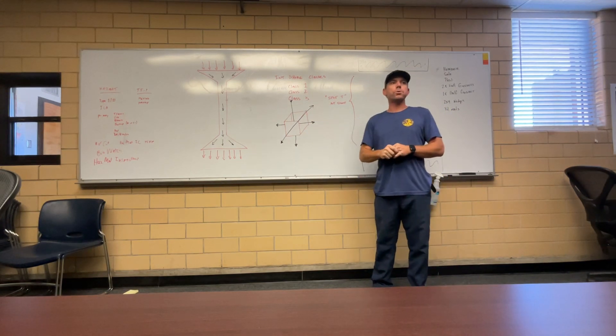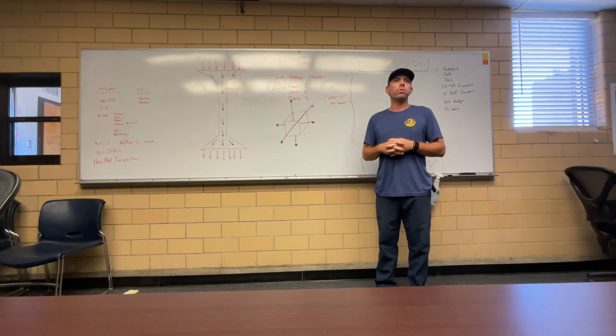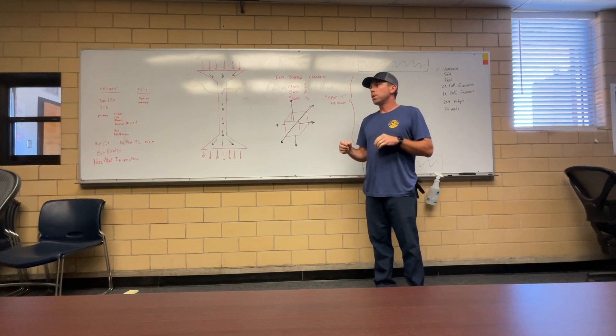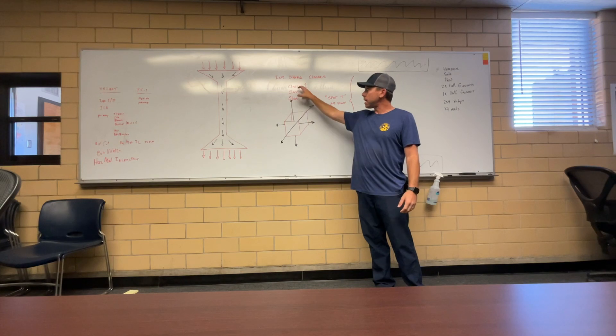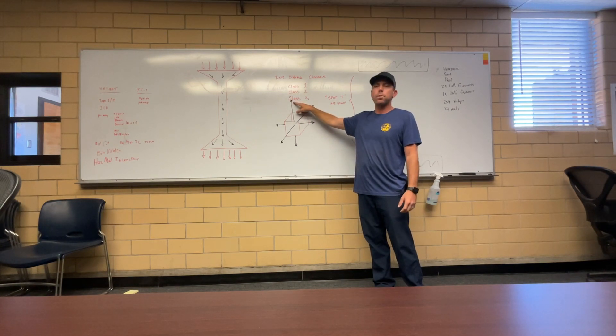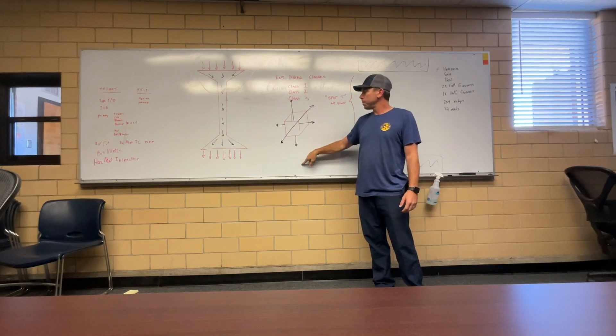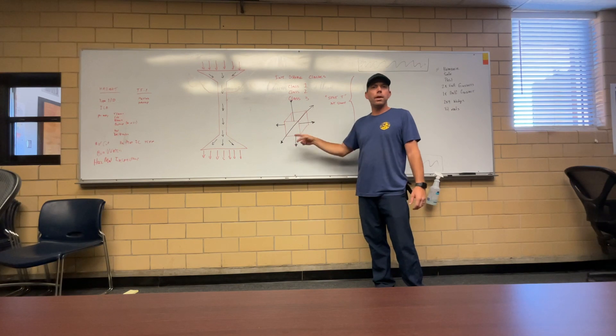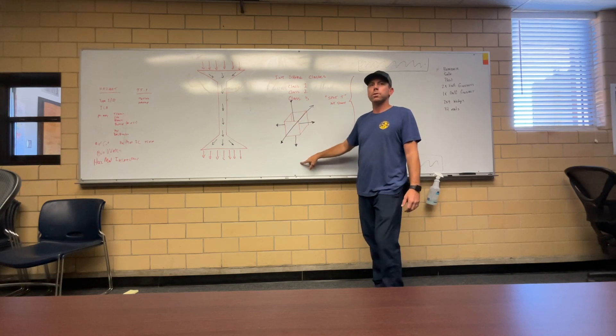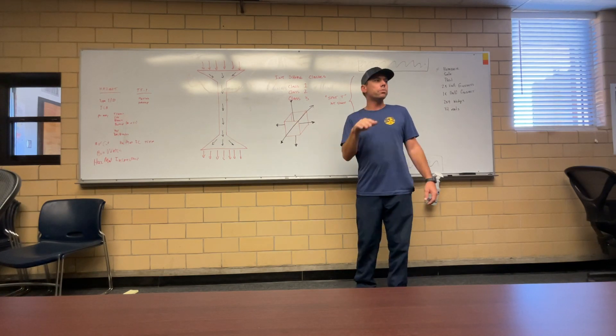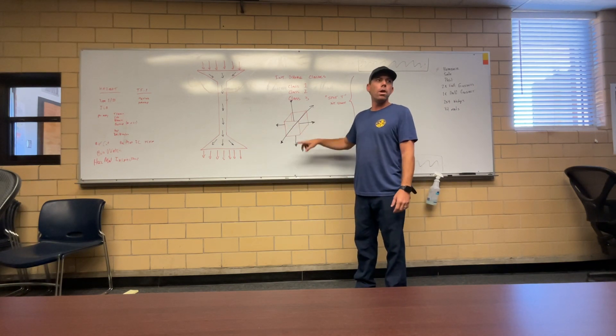A class two shore does exactly the same thing as a class one shore does with the addition that it will fight the movement of the structure left and right or forward and backwards. So a class one shore or spot T will only capture and redistribute weight if that weight is being shifted directly above straight down. If the building moves forward and back or left and right, it falls down. A class two shore will carry the weight from directly above and be redistributed into the ground. In addition to that, it will fight the movement in the structure or racking in the structure from left to right or forward and back.